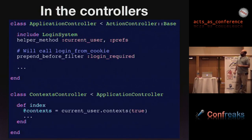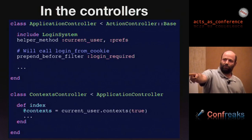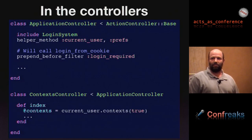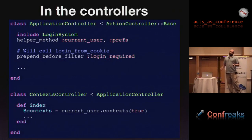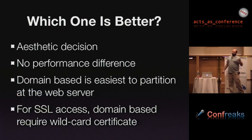In the application controller, we use the regular login system and have access to the current user and preferences. We added login required, which does all the logins and sets the current user and preferences. In the context controller, we just do context equals current user dot context. The current user is a global function that accesses an internal variable — very similar to the domain-based way, only we require a login to know which account the user comes from.